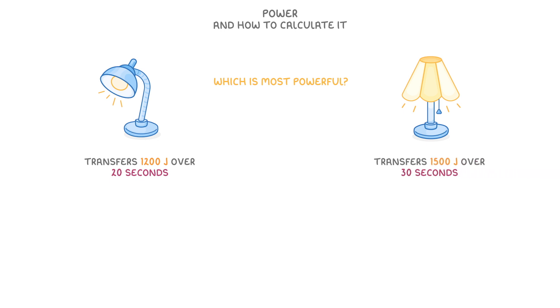To see how the equations work, let's compare two lamps to see which of the two is most powerful. The lamp on the left transfers 1200 joules over 20 seconds, while the other one uses 1500 joules over 30 seconds. In this case we'd be using the energy transferred version of the power equation, as there's no work being done.